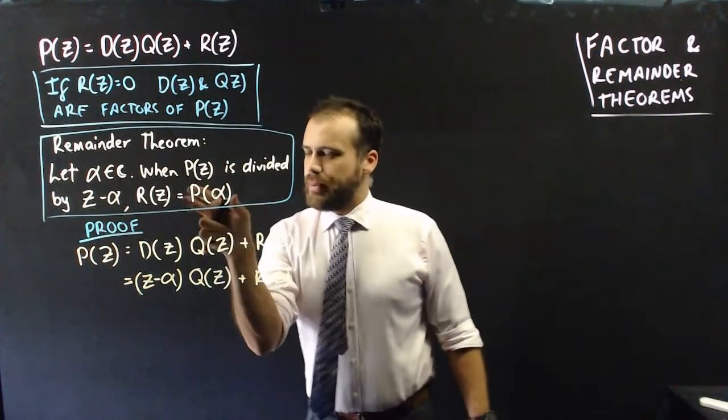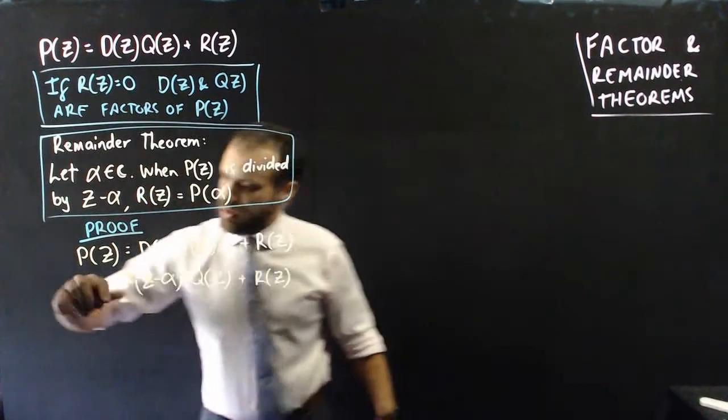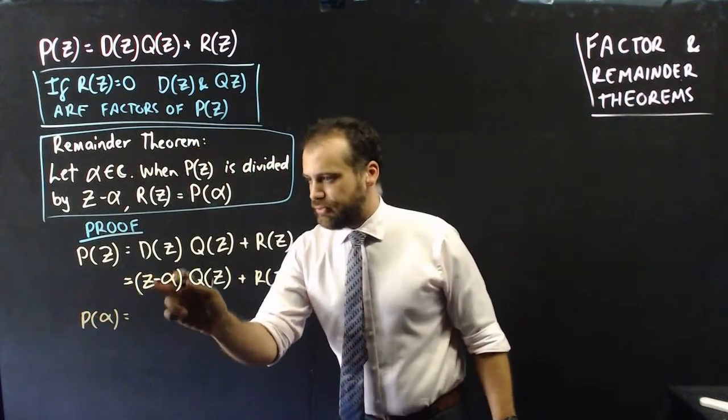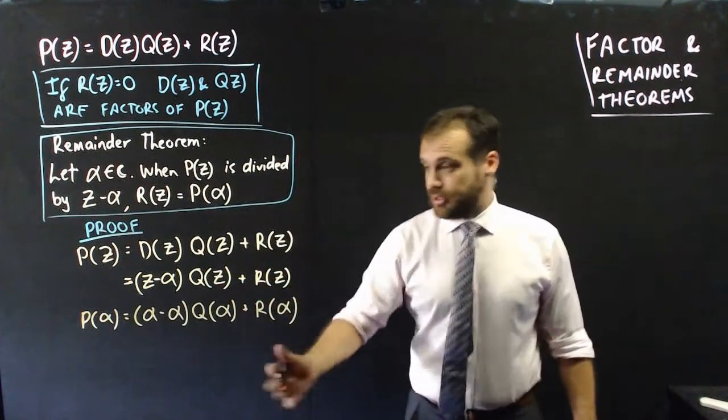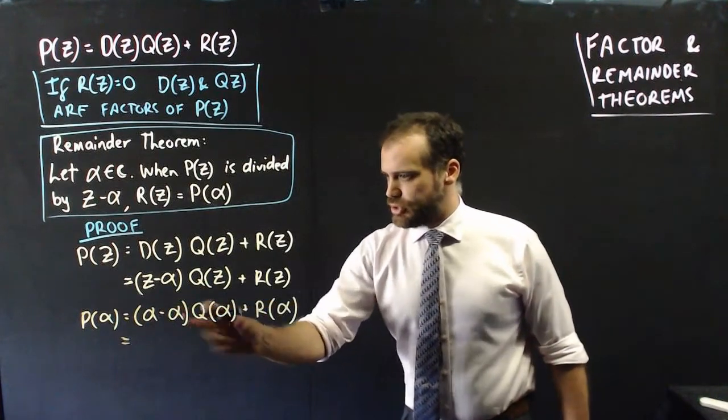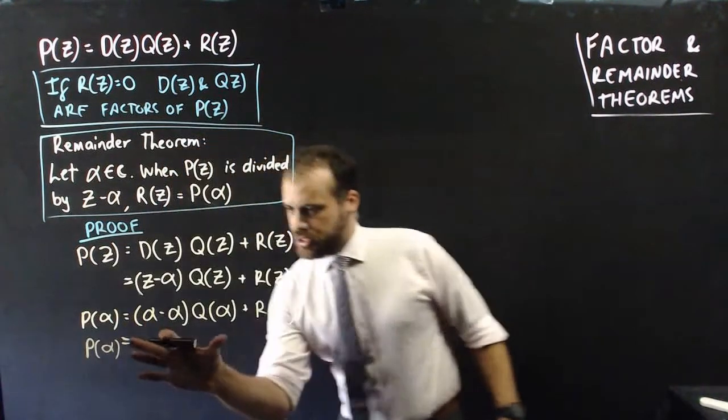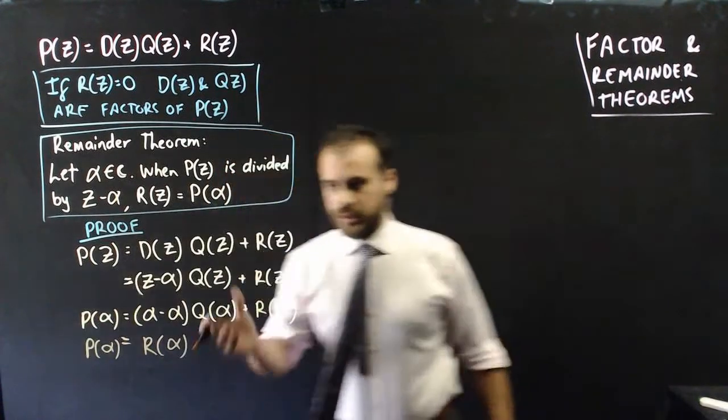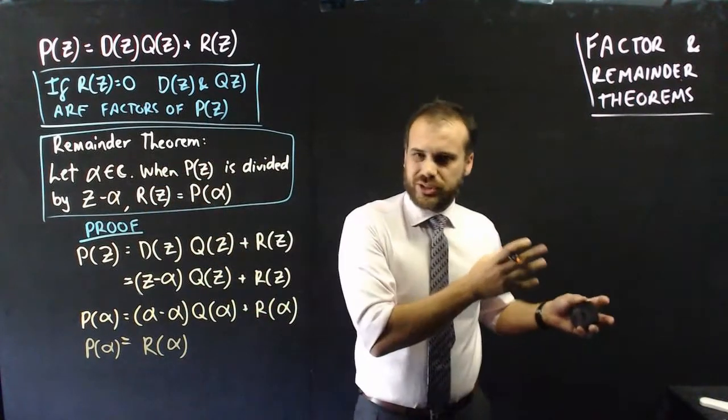And I want to prove that P alpha is equal to the remainder. So why don't we write this now as P alpha. Now that just means I'm going to sub in alpha for z everywhere. And you hopefully can see that this is the end of the proof, because what we've done is said alpha minus alpha. Well, that's going to be a big zero there. And zero times the quotient is going to be zero, which means that P alpha is just equal to what's left there. That's the proof. That's the remainder theorem. The stuff there is how it actually works.